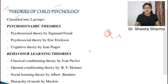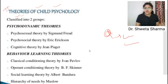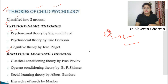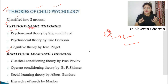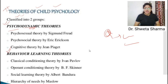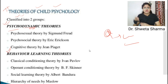The theories of child psychology are classified into two groups. First is psychodynamic, and second is behavior learning theories. Psychodynamic — 'psycho' means mental attitude, 'dynamics' means movement — so the psychology of a child from birth to growing up keeps changing. These are the basis of the three theories under this group.